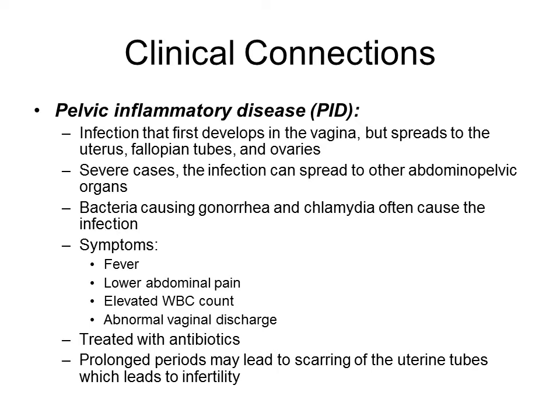In severe PID cases, symptoms include fever, low abdominal pain, increased white blood count, and abnormal vaginal discharge. This can be treated with antibiotics. However, if left untreated, the infection can lead to scarring of the uterine tubes, and extensive scarring can lead to infertility. So obviously, any infection should be treated as soon as possible.